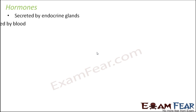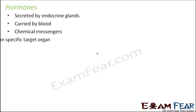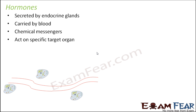Hormones are secreted by endocrine glands and are carried by blood. Since they are secreted by endocrine glands, they go directly into the blood, which transports them to different body parts. They are chemical messengers — they carry signals or information from one cell to another. Hormones move from their area of production, the endocrine glands, to their area of action, the target organ.